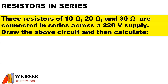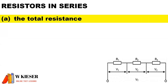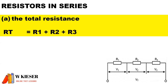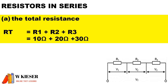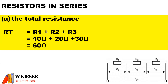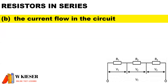For this example of resistors in series: three resistors of 10 ohms, 20 ohms, and 30 ohms are connected in series across a 220 volt supply. In part A, the total resistance is equal to R1 plus R2 plus R3. Substituting the values in, we get a total resistance of 60 ohms.